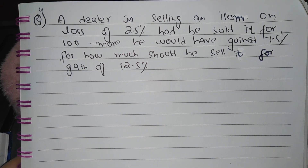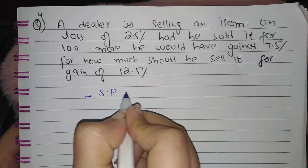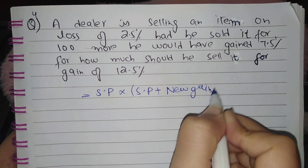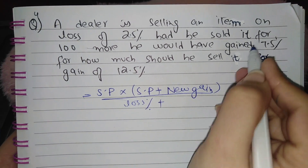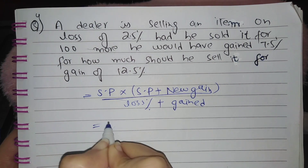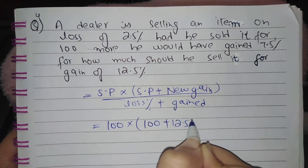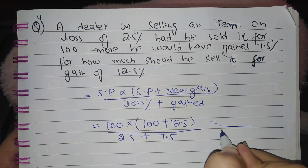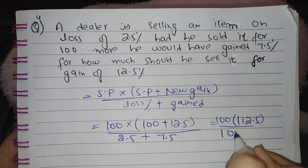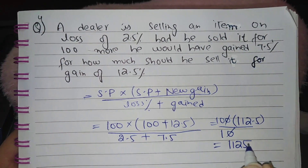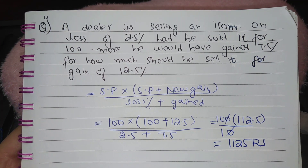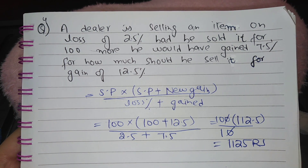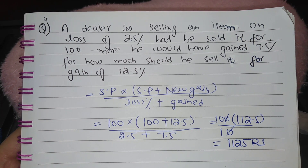Such questions can be solved very easily. Write: selling price multiplied by (100 plus new gain), whole divided by (loss percent plus previous gain). Putting in values: 100 is the selling price, new gain is 12.5 percent, loss percent is 2.5, previous gain is 7.5. So 2.5 plus 7.5 is 10. This gives 112.5 divided by 10, which simplifies to 1125 rupees as the new selling price.